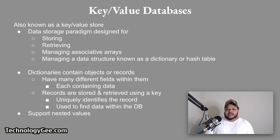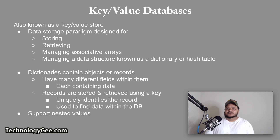A key-value database, or key-value store, is a data storage paradigm designed for storing, retrieving, and managing associative arrays — a data structure more commonly known today as a dictionary or hash table. Dictionaries contain a collection of objects or records, which in turn have many different fields within them, each containing data. These records are stored and retrieved using a key that uniquely identifies the record and is used to find data within the database. Key-value databases also support nested values.